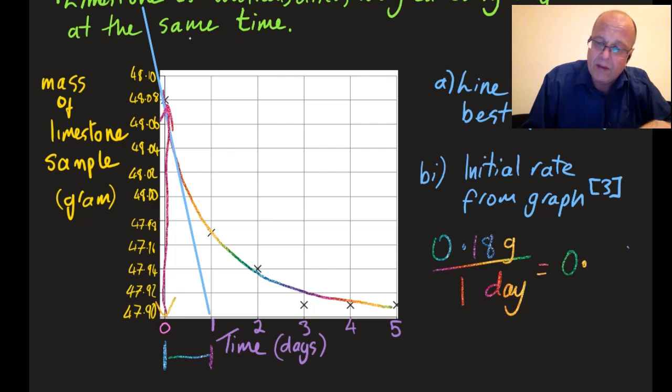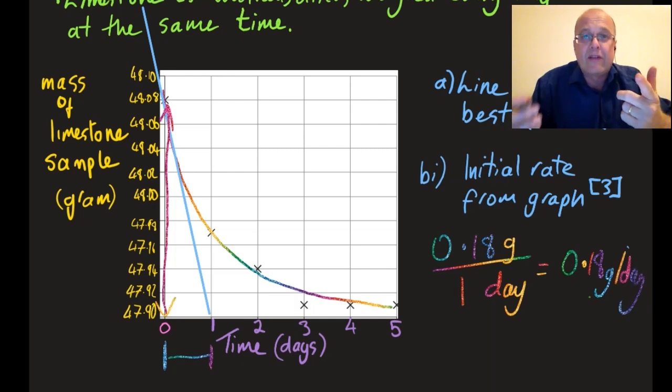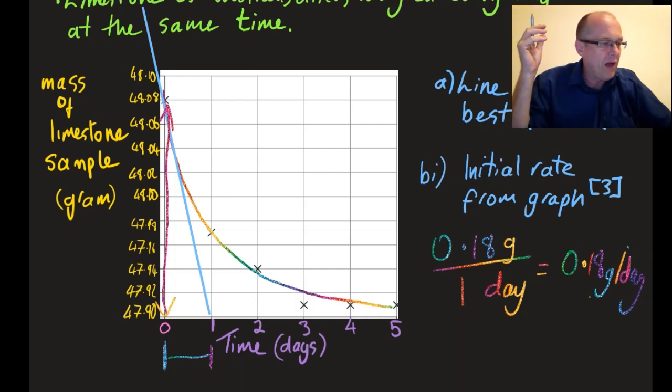My initial rate is 0.18, for one point, grams per day for the second point. Nice. They'd accept 0.16 to 0.2. Most people couldn't do that apparently.